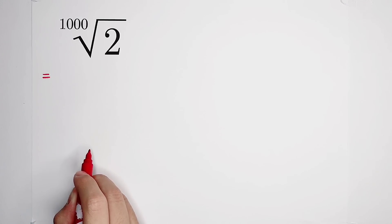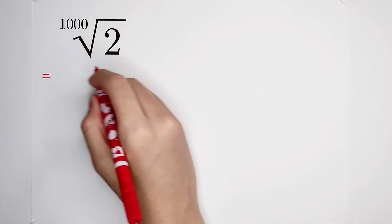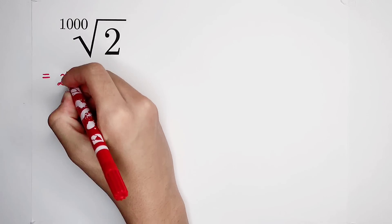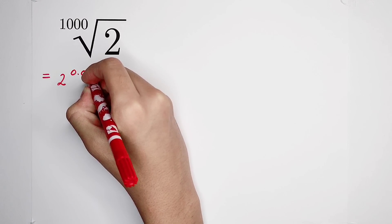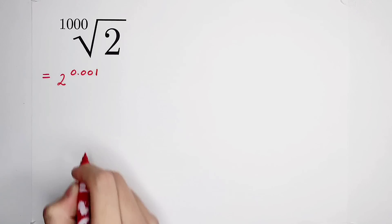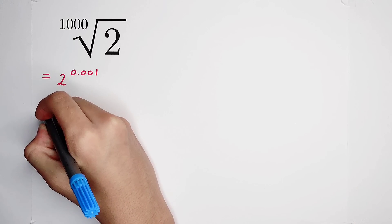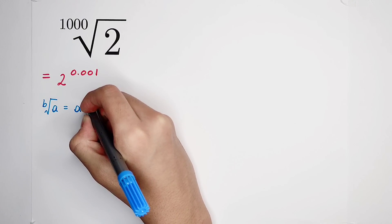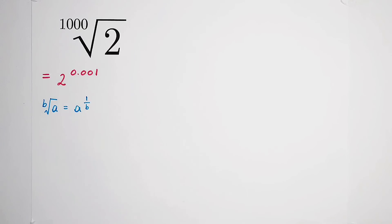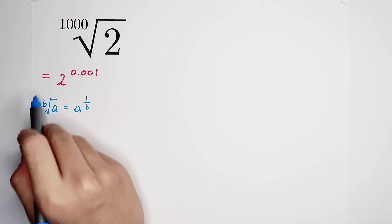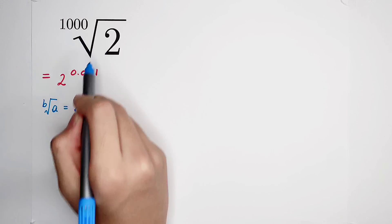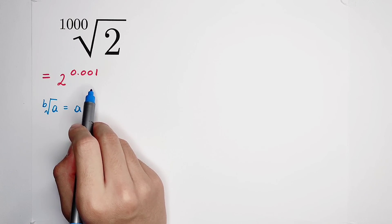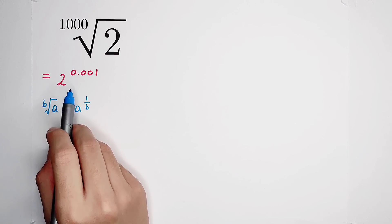Firstly, transform this into an exponential form: 2 to the power of 0.001. We use the formula that the b-th root of a equals a to the power of 1 over b. So a is 2, b is 1,000. The thousandth root of 2 is 2 to the power of 1 over 1,000, and 1 over 1,000 is 0.001.